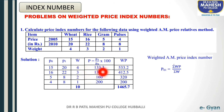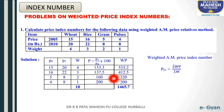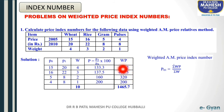Weights W are already given. We want summation WP, so multiply W into P: 4 into 133.3 is 533.2; 3 into 137.5 is 412.5; 2 into 160 is 320; 1 into 200 is 200. After adding these values, summation WP is 1465.7.